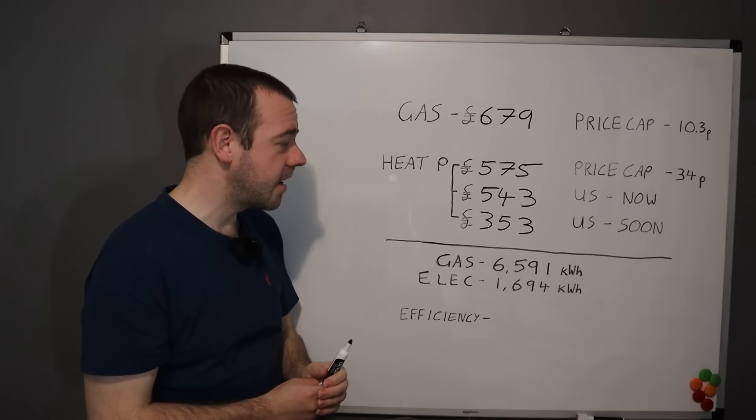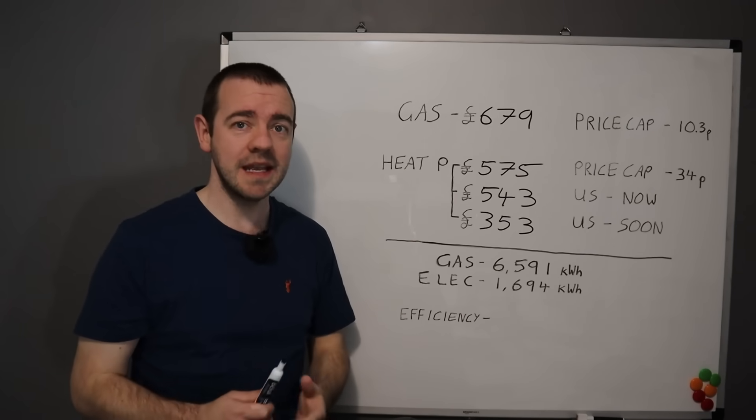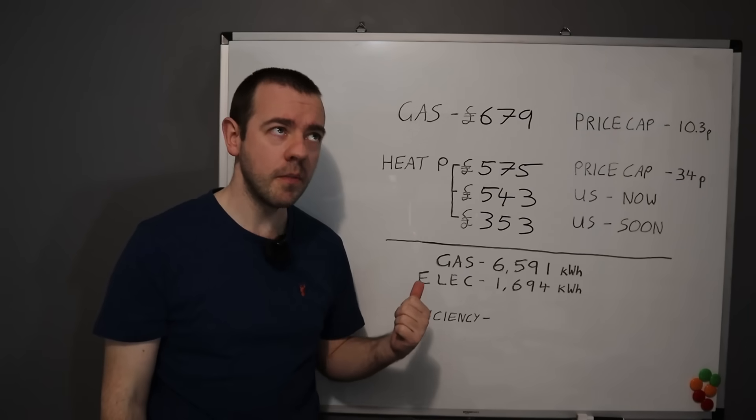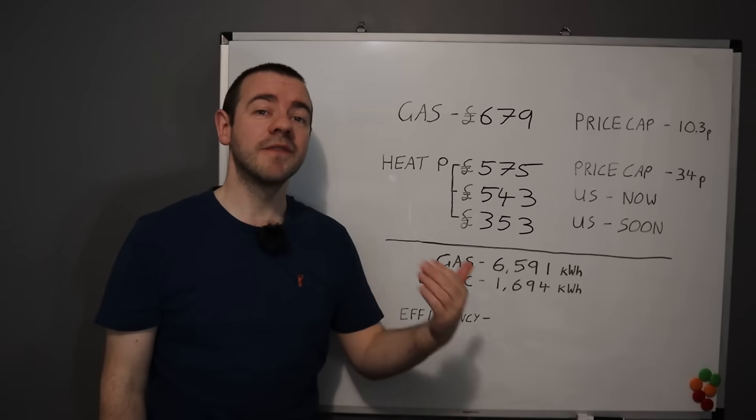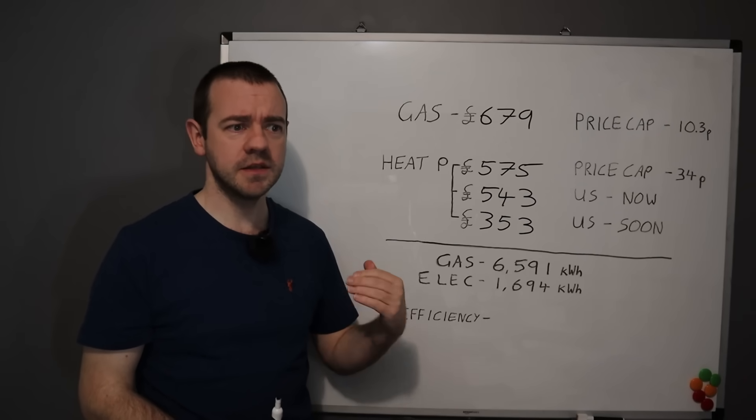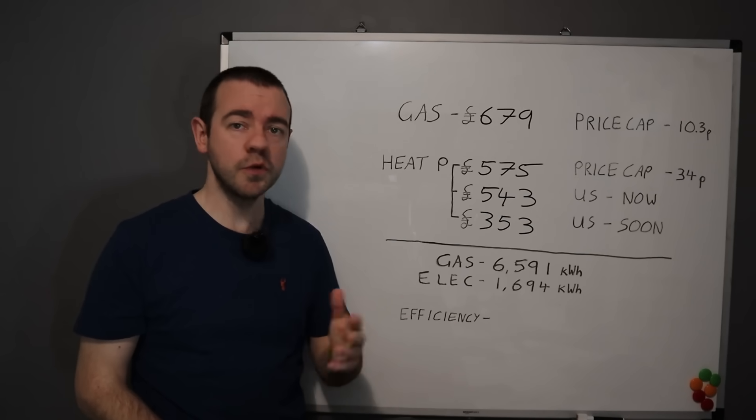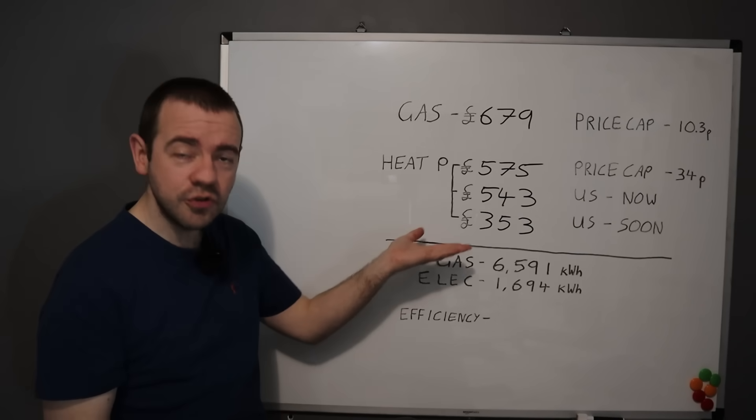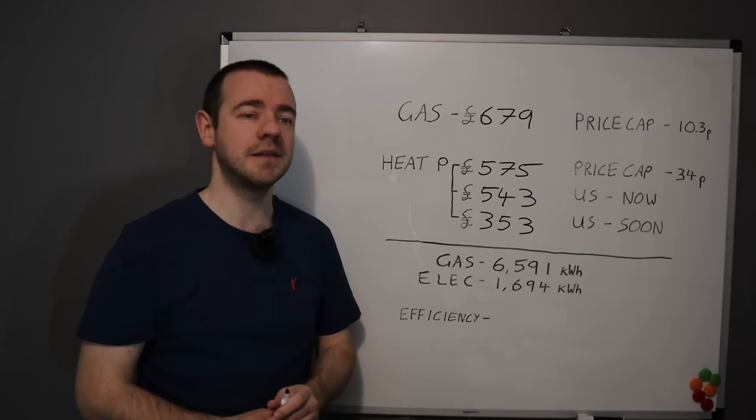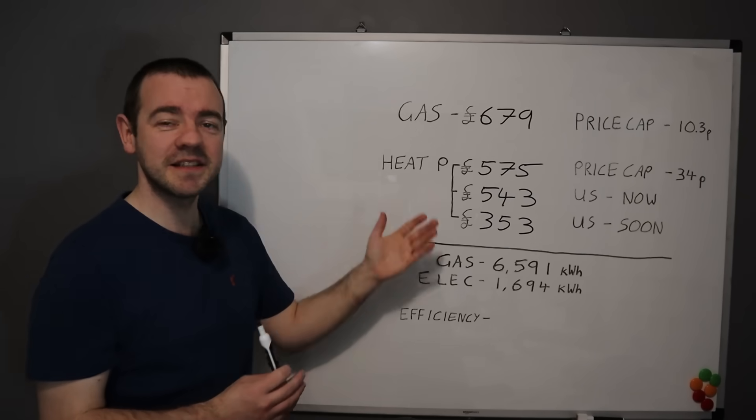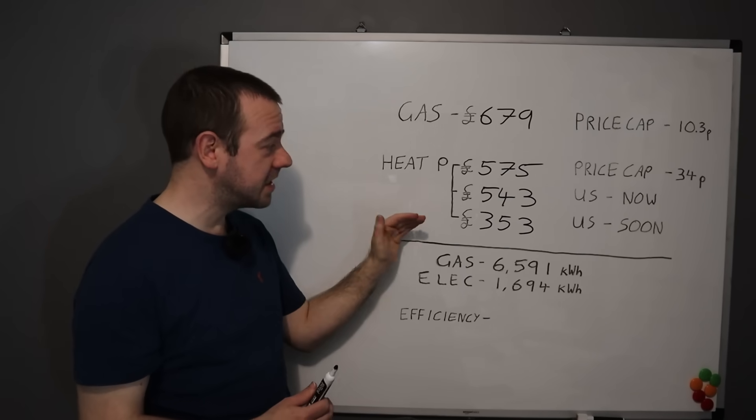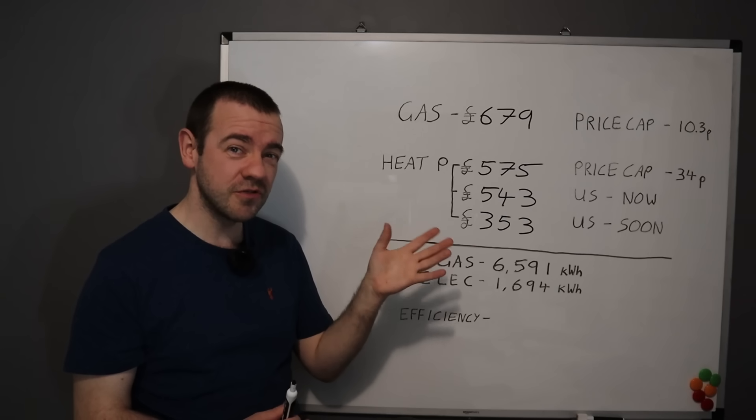And of course we use 1,694 kilowatt hours in total, which, well, you can see how much less we've used. That's for two reasons. One, heat pumps are far more efficient and two, the gas central heating boiler we had, although we had the Tado thermostats, the radiator thermostats, so I've done as much as possible.